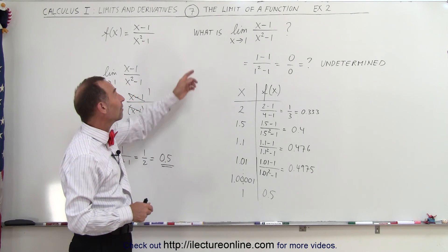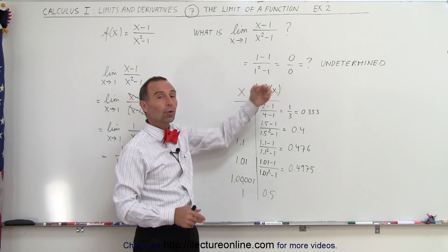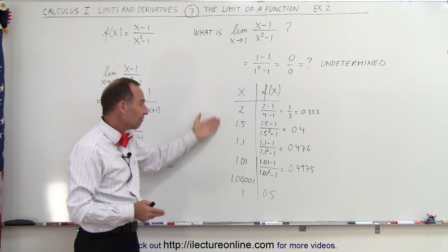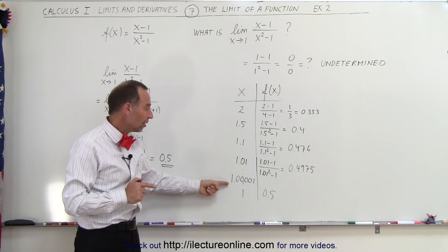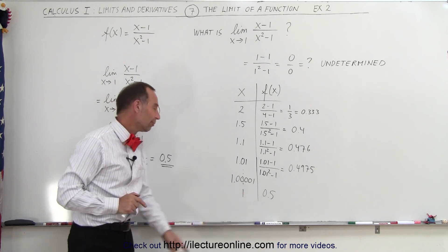So at first sight, you may have the situation where if you plug in the value into the function, you get an indetermined or an invalid result. But then when you plug in values and you let the value of x get closer and closer and closer to 1, essentially in the limit approaching 1, you find the corresponding value for the function 0.5.